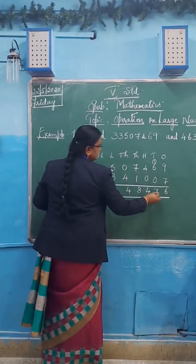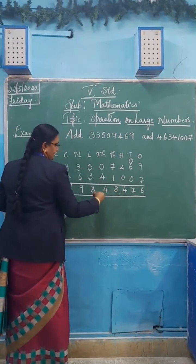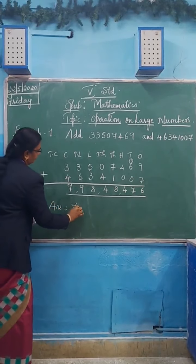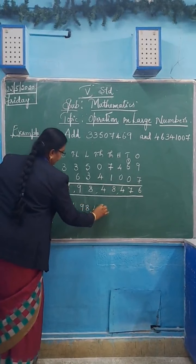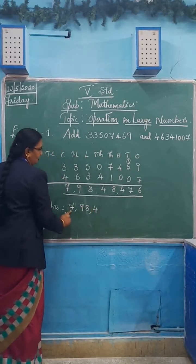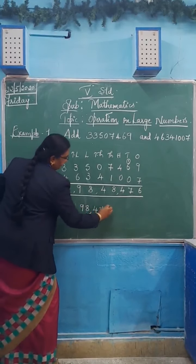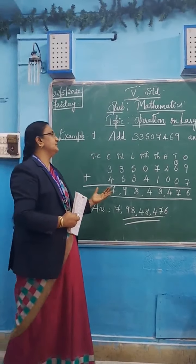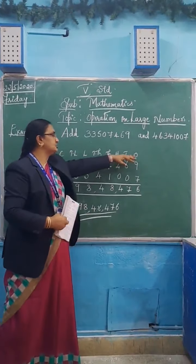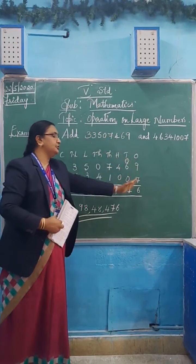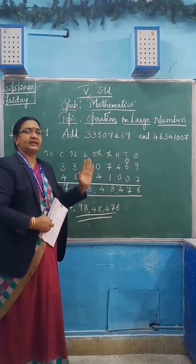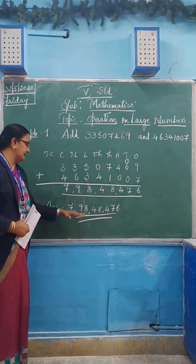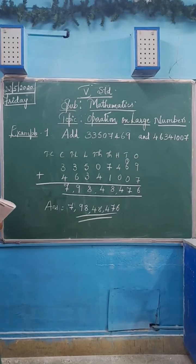Now see — ones, tens, hundreds, comma, thousands, ten thousands, comma, lakh and ten lakh. So your answer is seven crore, ninety-eight lakhs, forty-eight thousand, four hundred and seventy-six. This will be your answer. Very easy, children. You have to write the place values on top, place the given numbers according to the place values from the right hand side, then start adding it, and you will get the answer. This is the way how to do the addition.